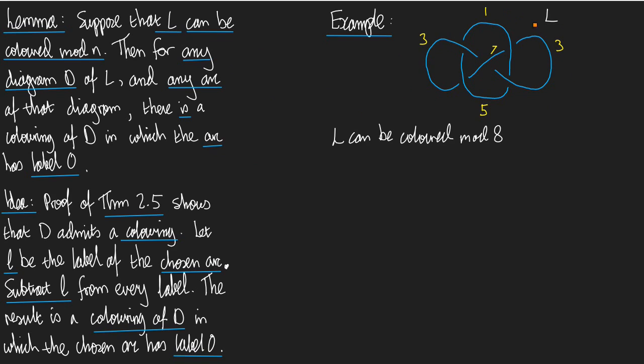And of course, the numbers aren't all congruent mod 8. So, this is a colouring. So now, let's choose our favourite arc and modify the colouring so that our favourite arc has label 0. Let's choose as our favourite this guy here.